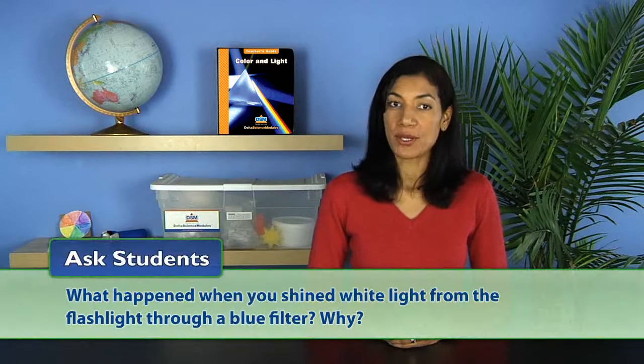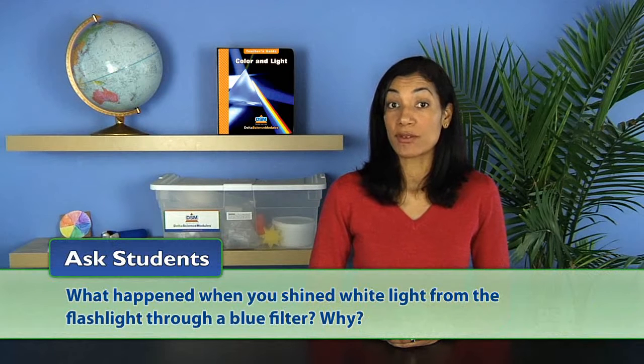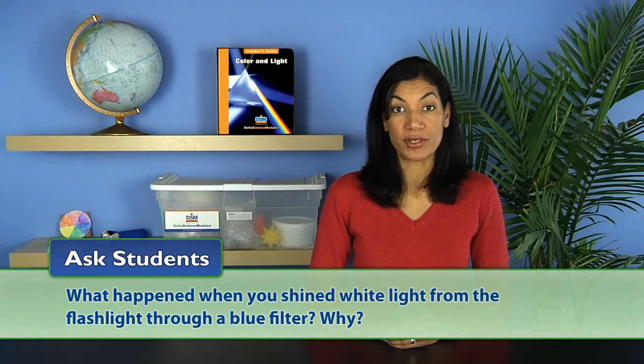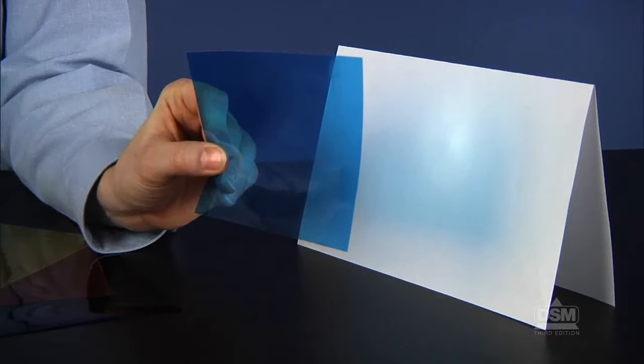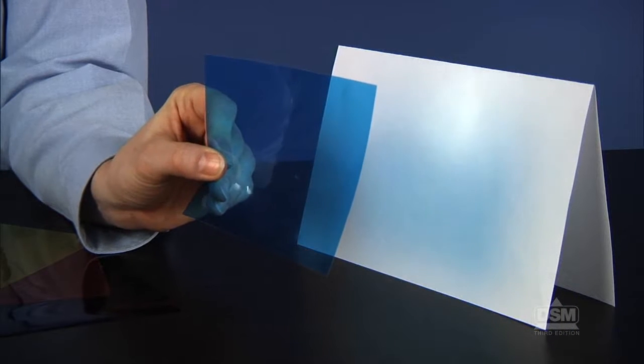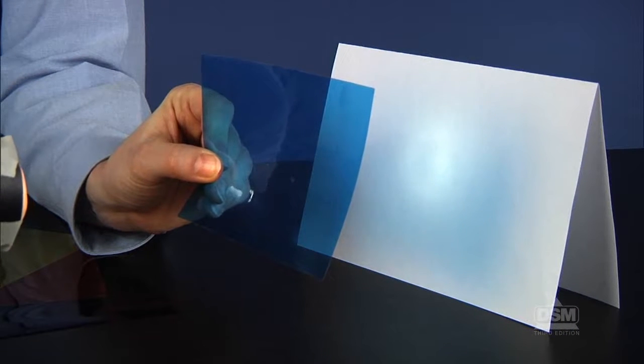After about 15 minutes, turn on the classroom lights and discuss the students' results. Ask what happened when you shined white light from the flashlight through a blue filter and why. They should observe that the light that passed through the blue filter was blue because all the other colors were filtered out or absorbed by the blue filter.